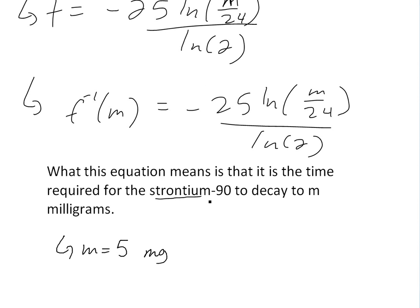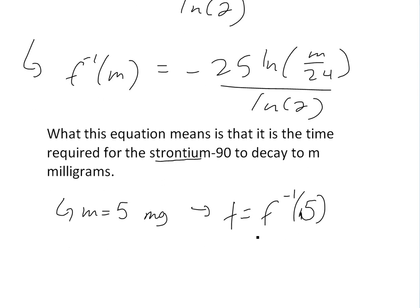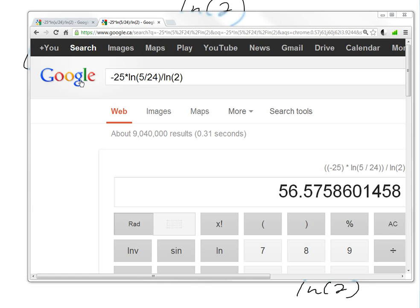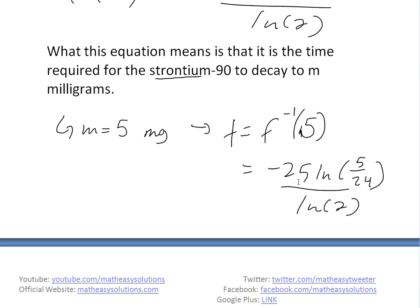So t equals f inverse of 5. This is the time required for the 24 milligram mass to decay to 5 milligrams. This equals -25 times ln(5/24) divided by ln(2). Let's plug this into Google calculator. We get 56.6, which is the exact same as my earlier video. So it takes roughly 56.6 years to decay to 5 milligrams.